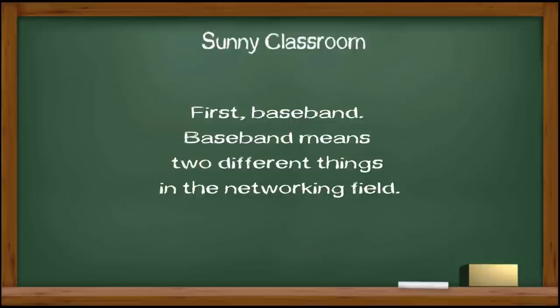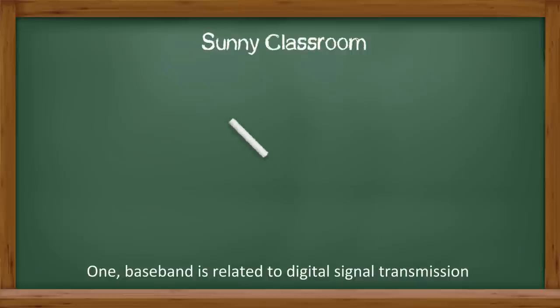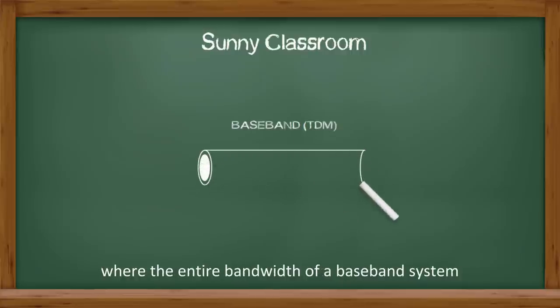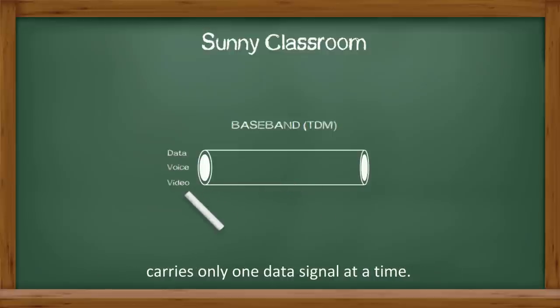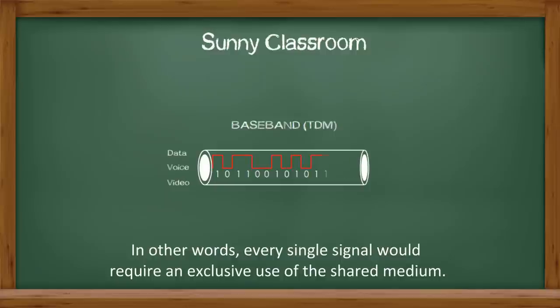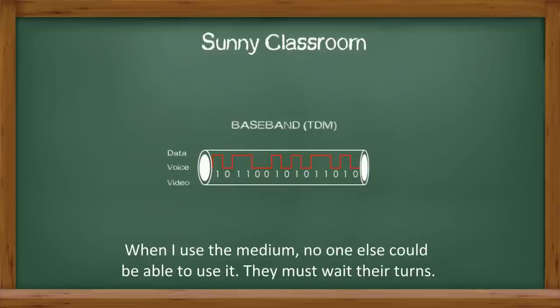First, baseband. Baseband means two different things in the networking field. Number one: Baseband is related to digital signal transmission, where the entire bandwidth of a baseband system carries only one data signal at a time. In other words, every single signal would require an exclusive use of the shared media. When I use the media, for example, no one else could be able to use it.